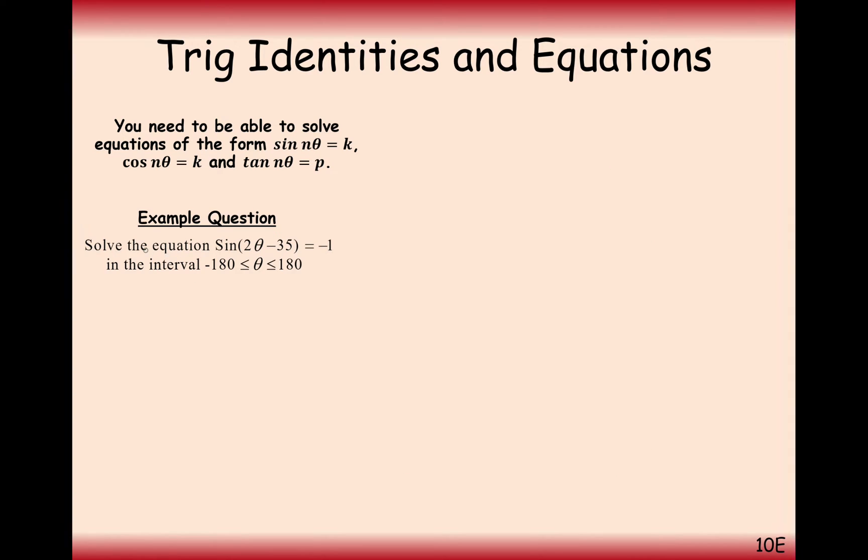Let's have a look at this one here, slightly more difficult. Solve the equation sin(2θ - 35) equals minus 1 from minus 180 to theta up to 180. The first thing we do here is we change the domain. We double both sides of the theta value, and we also subtract 35 from both sides of the theta. So we get now it's from minus 395 to 325.